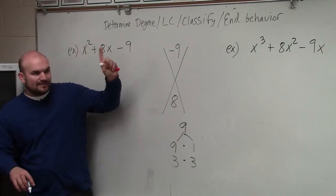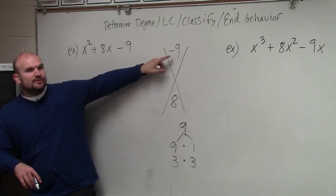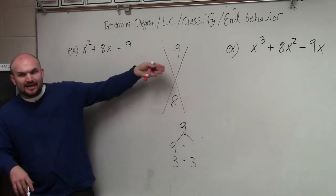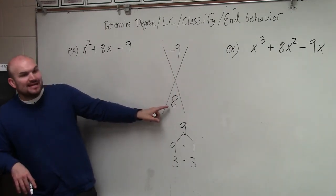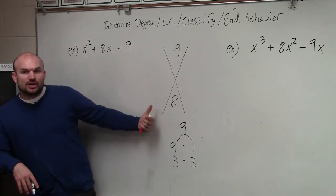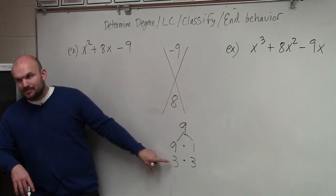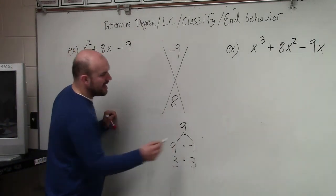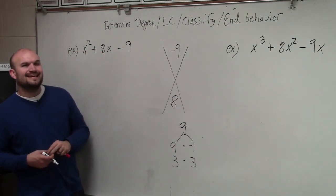Now, I will give you a helpful hint though. When they multiply to give you a negative number, one of them has to be negative. And if they add to give you a positive number, then the larger of them has to be positive. Well, these are the same numbers, so 3 and 3 is not going to work. So the only possibility is positive 9 and negative 1.